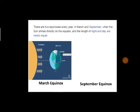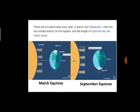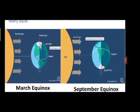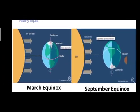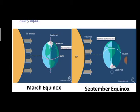There are two equinoxes every year in March and September, when the sun shines directly on the equator and the length of night and day are nearly equal. On the slide you can see both the equinoxes — March equinox and September equinox — and the difference in the position of the poles. You can also see the circle of illumination and the tilting of the axis.